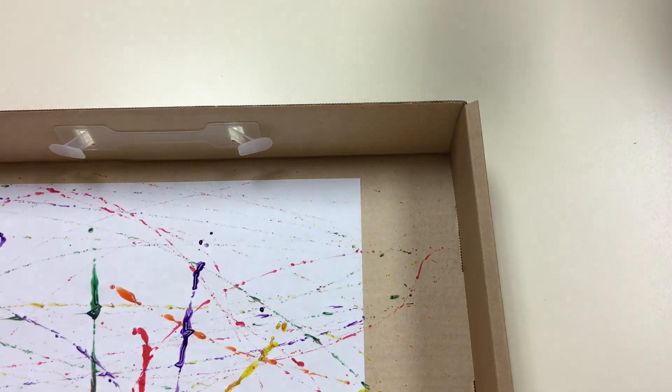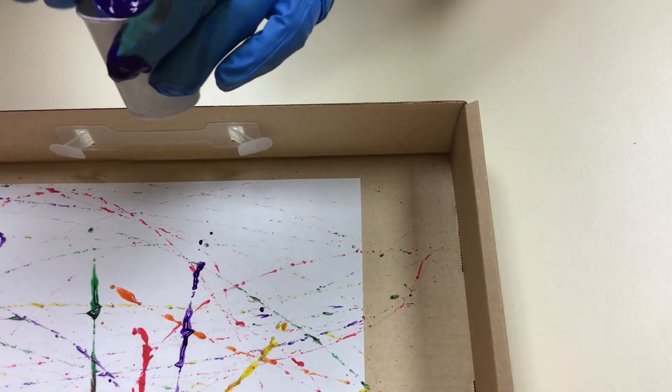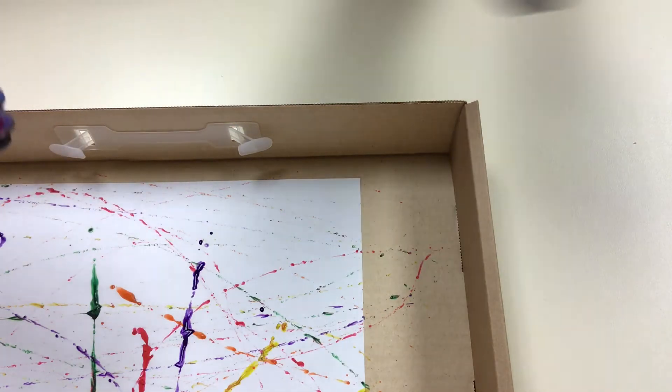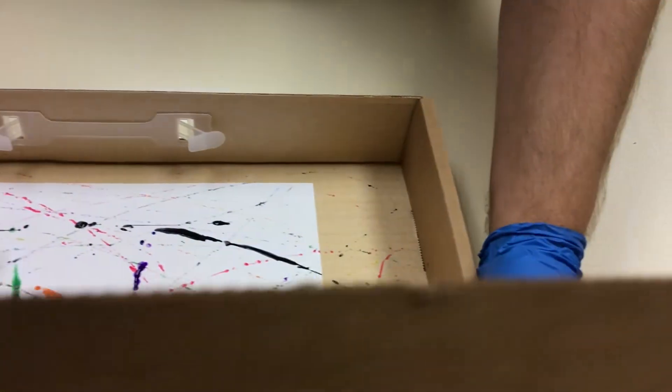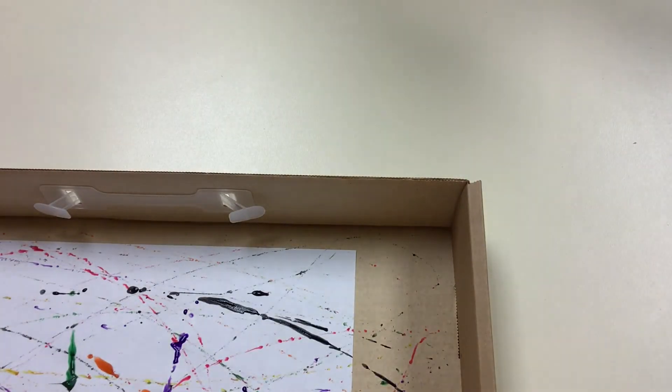So Jackson Pollock was an abstract artist, abstract expressionism is the term he coined. Art critics at the time dubbed his paintings action paintings. So as you can see, the action of the painting is what they were focusing on. The action or the emotion of the painting.